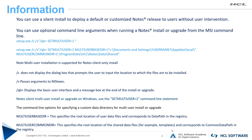Now let's understand the command line arguments. /s does not display the dialog box that prompts the user to input the location to which the files are to be installed. /v passes arguments to MSI.exe. /qb+ displays the basic user interface and a message box at the end of the install or upgrade.